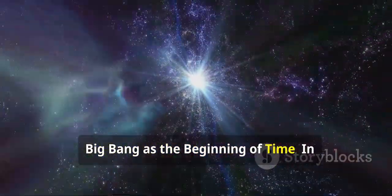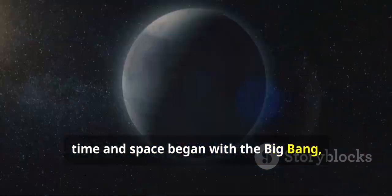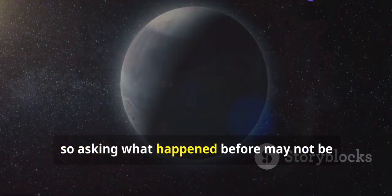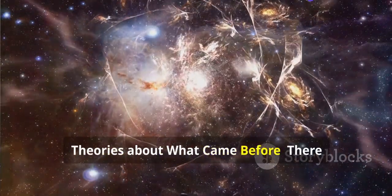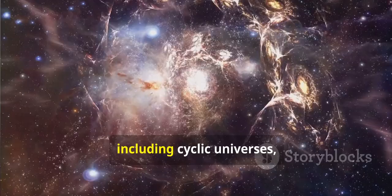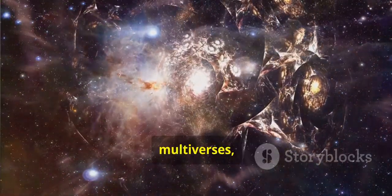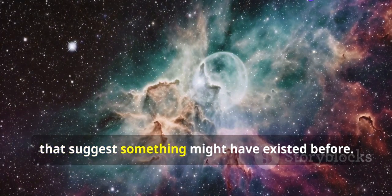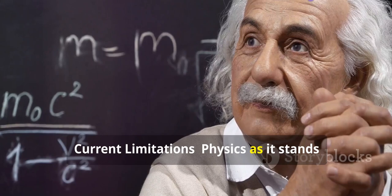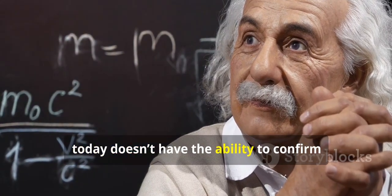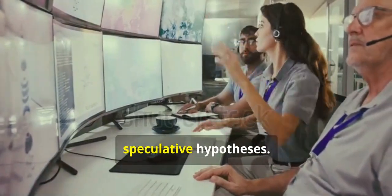Big Bang as the beginning of time: In most conventional models, time and space began with the Big Bang, so asking what happened before may not be a valid question. Theories about what came before: There are speculative theories, including cyclic universes, quantum fluctuations, multiverses, and brane collisions, that suggest something might have existed before. Current limitations: Physics, as it stands today, doesn't have the ability to confirm or deny these ideas, making them fascinating but still speculative hypotheses.